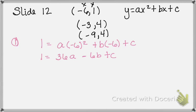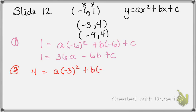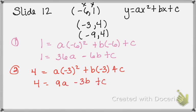We're going to do equation two. We're going to use y is 4, equal to a times negative 3 squared plus b times negative 3 plus c. We simplify: 4 is equal to 9a minus 3b plus c. So this is our second equation.